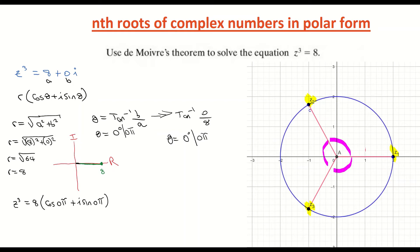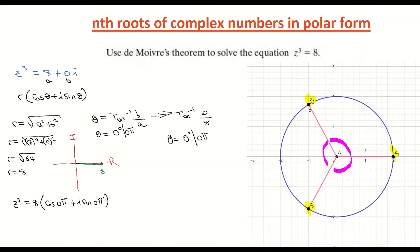Next I want to eliminate the power of 3. The cubed root of 8 is 2, which is the same as 8 to the power of 1/3. So I multiply across by the power of 1/3, giving z = [8(cos 0π + i sin 0π)]^(1/3). That's the same as getting the cubed root.